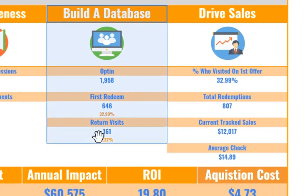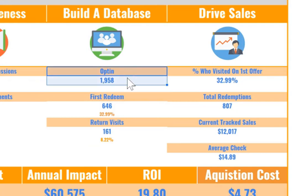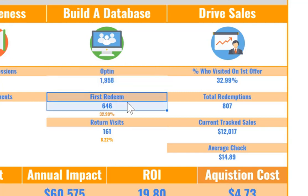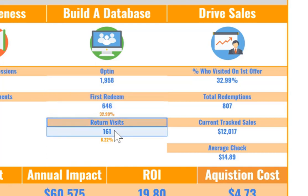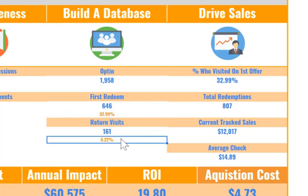Those engagements have led to a database — and not just a database, but an active one. We've got 1,958 messenger and email opt-ins. Messenger has 90% open rates and 40–60% engagement rates — it's email from 20 years ago. Of those 1,958 opt-ins, 646 of them — 32.99% — have physically walked into the restaurant and spent money. And 161 of them have returned for a second or third visit, so 8% have come back.